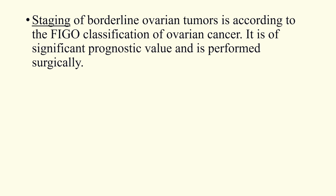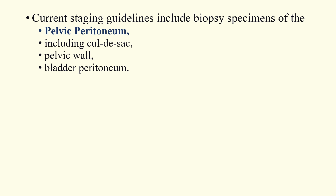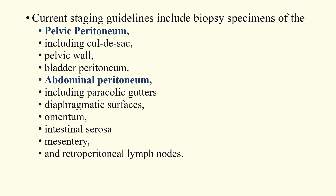Staging of borderline ovarian tumors follows the FIGO classification of ovarian cancer, is of significant prognostic value, and is performed surgically. 75 percent of patients with borderline tumors are diagnosed at an early FIGO stage. Staging guidelines include biopsy specimens of the pelvic peritoneum — including the cul-de-sac, pelvic wall, and peritoneum overlying the bladder — as well as the abdominal peritoneum, paracolic gutters, diaphragmatic surfaces, omentum, intestinal serosa, mesentery, and retroperitoneal lymph nodes.